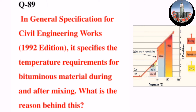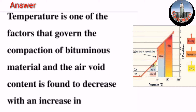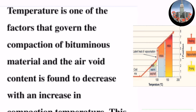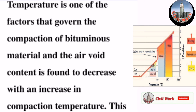Question number 89 in the General Specification for Civil Engineering Works, 1992 edition, specifies the temperature requirements for bituminous material during and after mixing. The reason behind this is that temperature is one of the factors that govern the compaction of bituminous material.